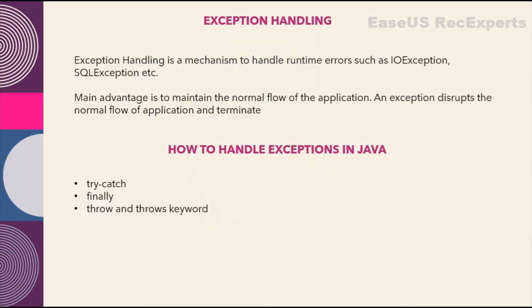So what exactly is exception handling? Exception handling is a mechanism to handle runtime errors such as IOException or SQLException, or any other exception. The main advantage is that it will maintain the normal flow of the application — otherwise if any exception occurs the program will terminate abruptly — but we can handle closure of resources or any cleanup activities as part of handling the exception as well. The program will not abruptly terminate; it will execute the remaining statements which are present in the program.